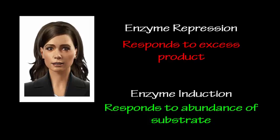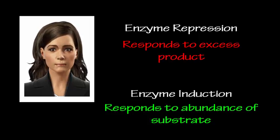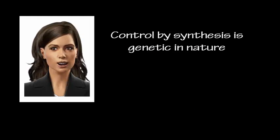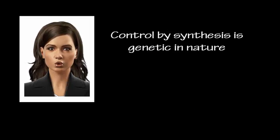The difference between control by synthesis and the other two mechanisms you reviewed before, where inhibitors were used, is that control by synthesis works at the level of the genetic code, making this type of control an exquisite way for the cell to control how much enzyme is available.